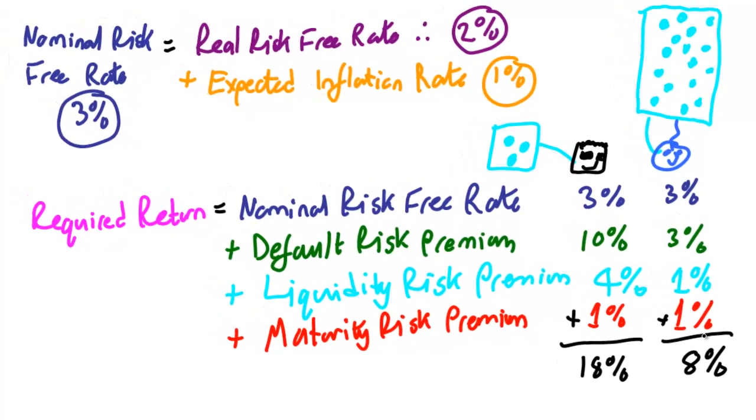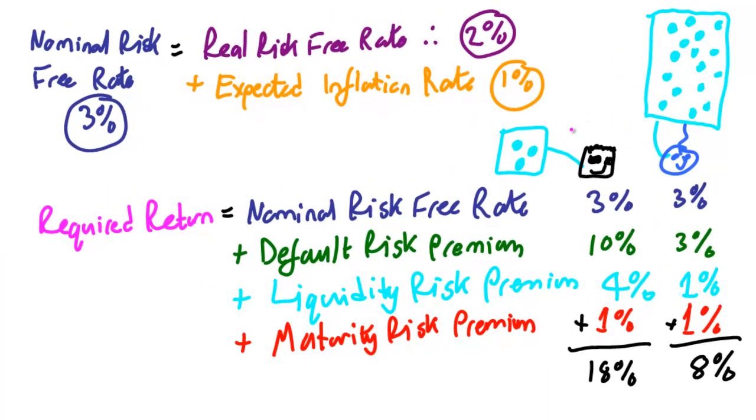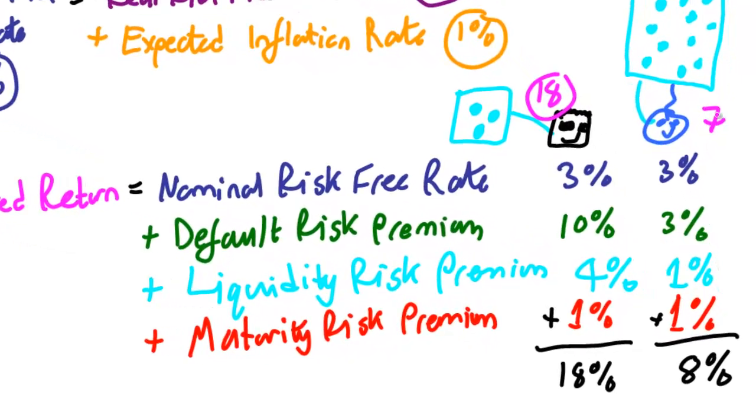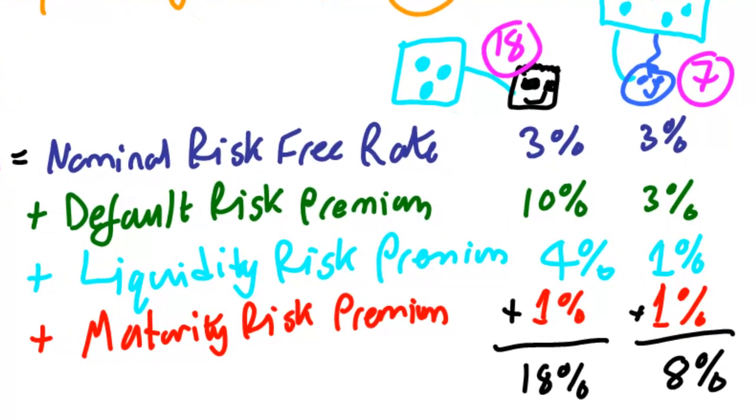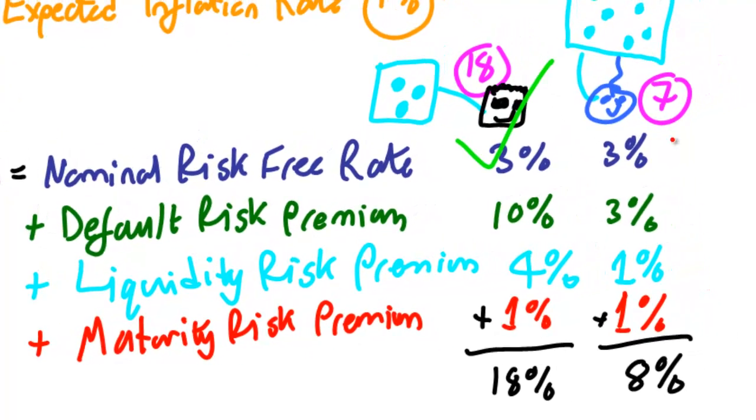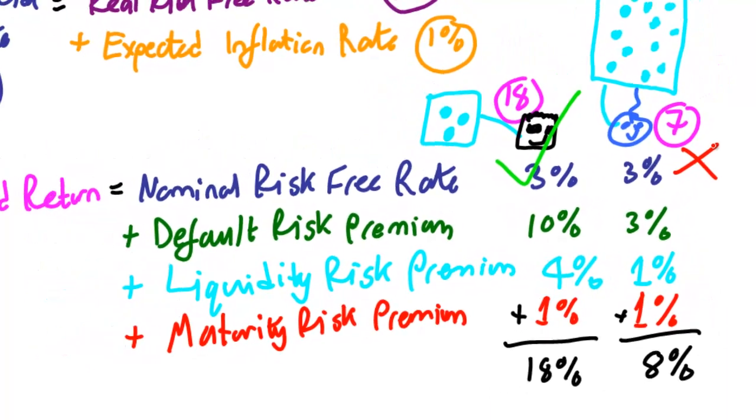For Andy's company, we need at least 18%. For Sean's, we need at least 8%. Andy does offer 18% on his bond, but Sean's only offering 7%. So you lend the money to Andy because you're getting an acceptable rate of return.